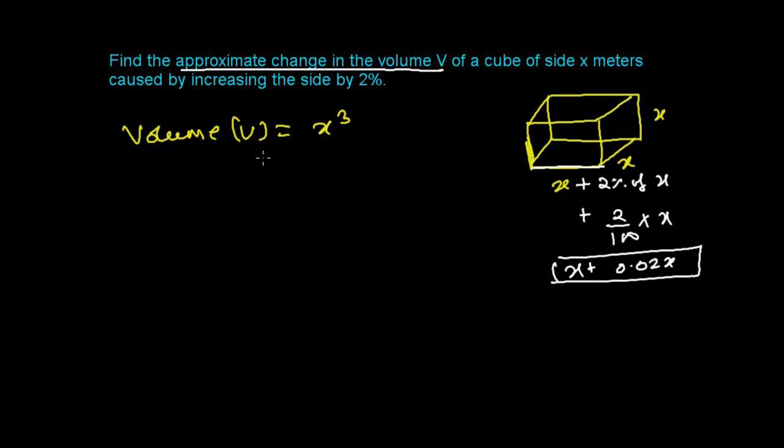So this is your initial volume and the final volume, the new volume. Let's say this is V₁ and the new volume is V₂, that's (x + Δx)³. This is our new volume. Now we have the function.